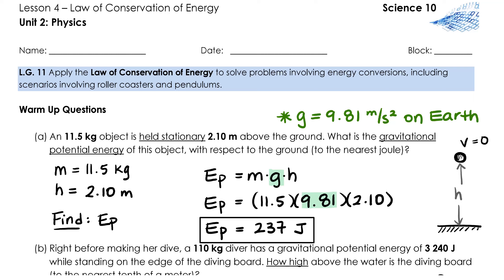For warm-up question A, we had an object held stationary above the ground. Recall that stationary means the initial speed of the object is zero. What is the gravitational potential energy of this object? Start by making a list of things you know from the question and identifying what you're supposed to find, EP. Then write the formula for gravitational potential energy and substitute in the values that you know. I got 237 joules because the question asked us to round to the nearest joule.